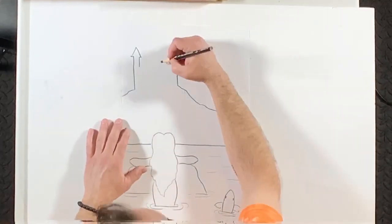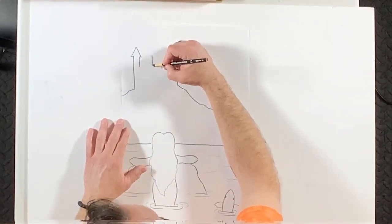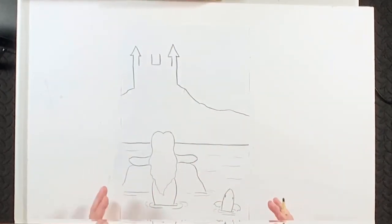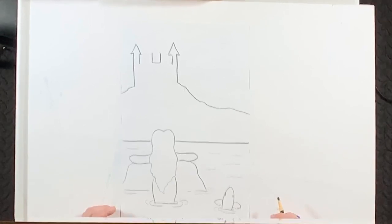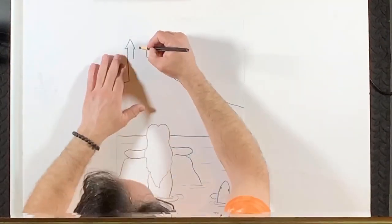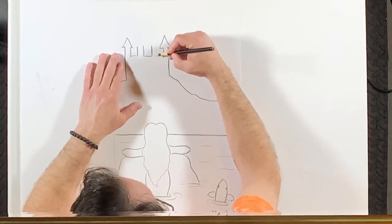And then, if you want to, right in the middle, you can put... it looks like just a block U, right? But that's going to be the inner walls of our two towers here.